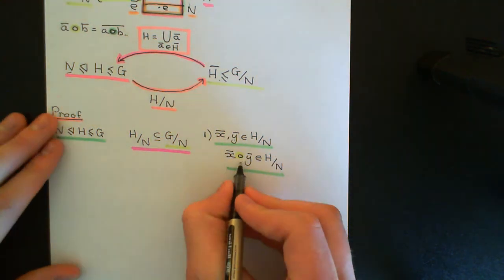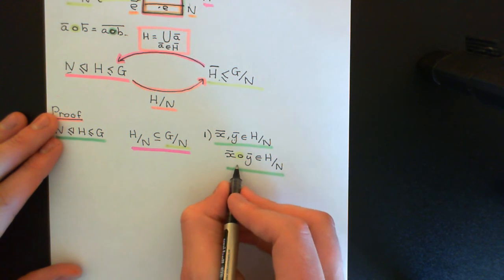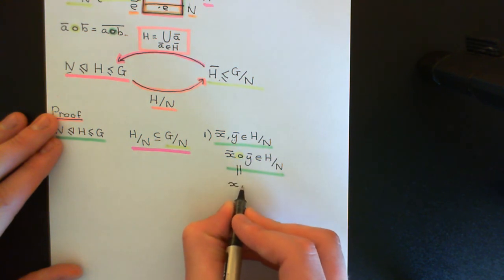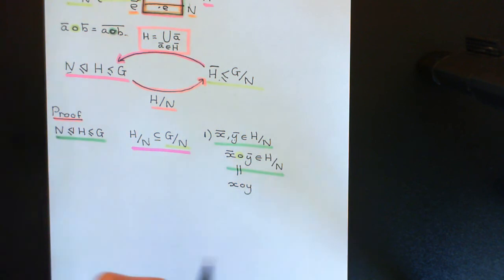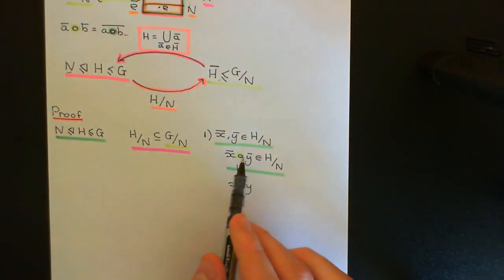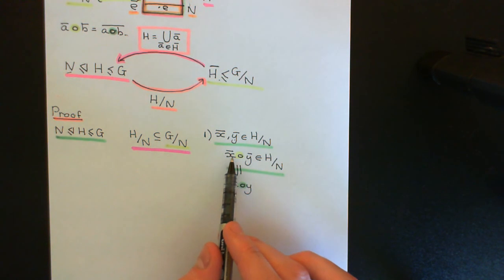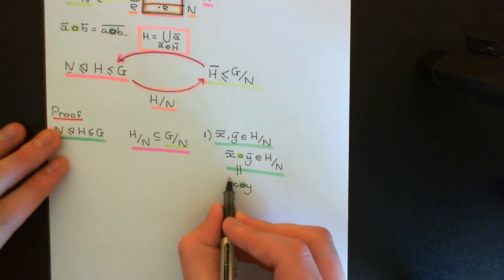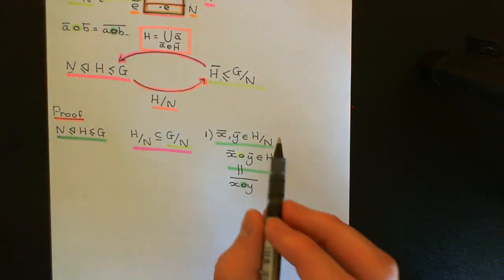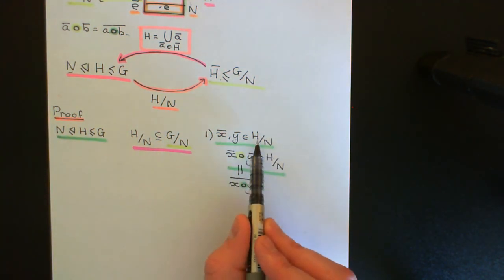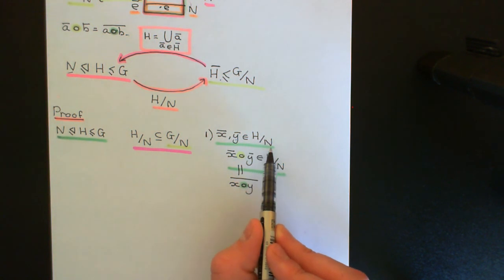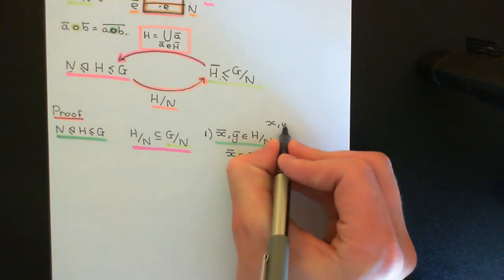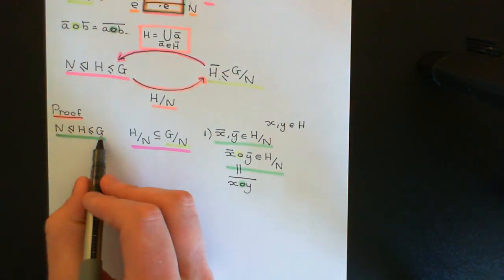Axiom two is associativity — we don't need to worry about this. We know associativity works on the larger quotient group, and we've got a subset with the inherited composition law, so associativity must hold automatically. Axiom three: the identity. Since H completely contained N, one of the cosets in H/N is the coset containing the identity element — identity-bar — which is the identity of the quotient group. So the identity is in our subset.